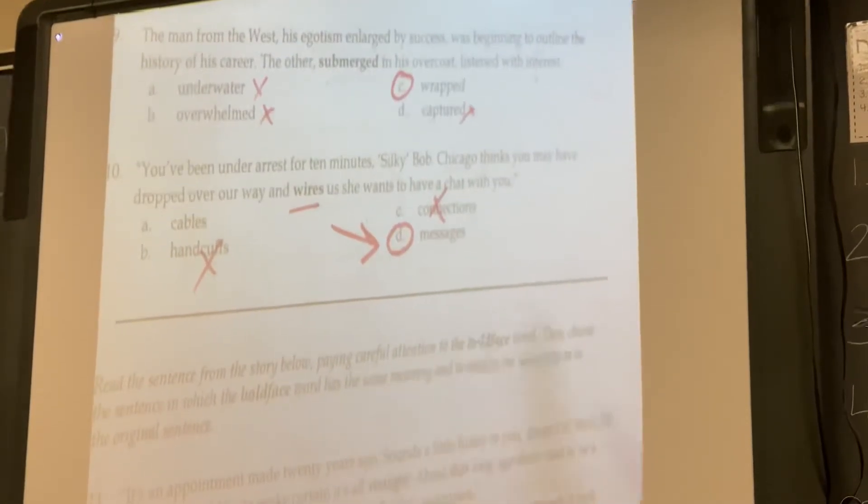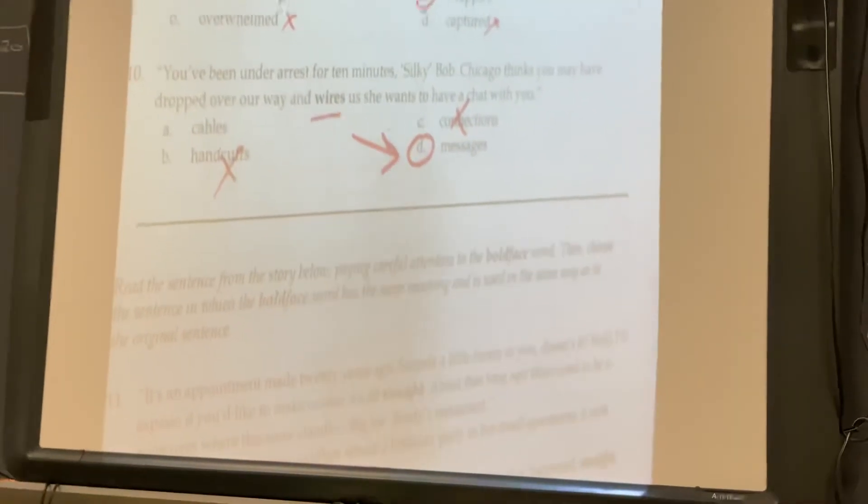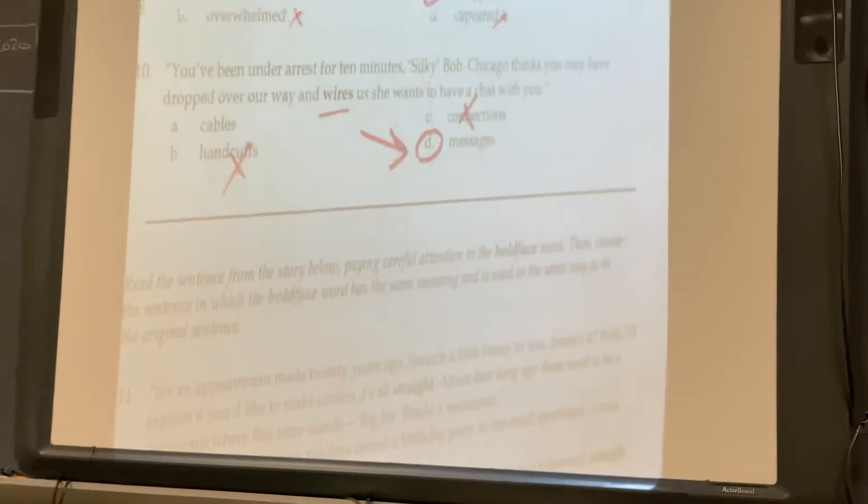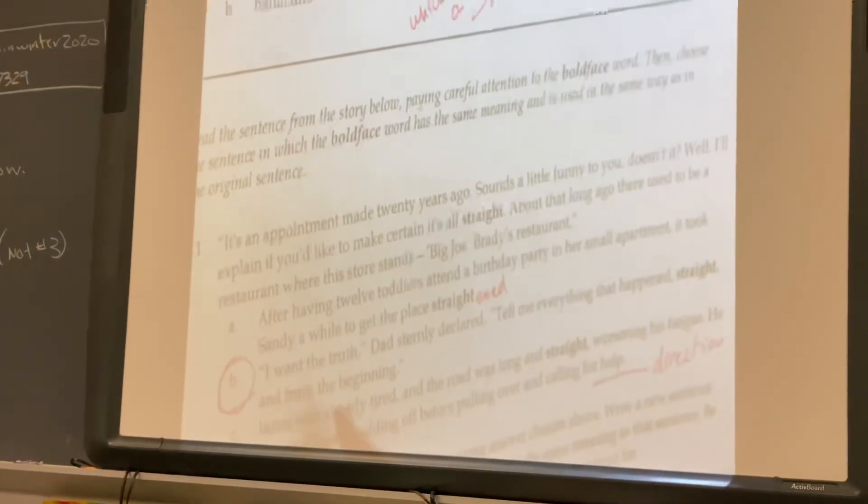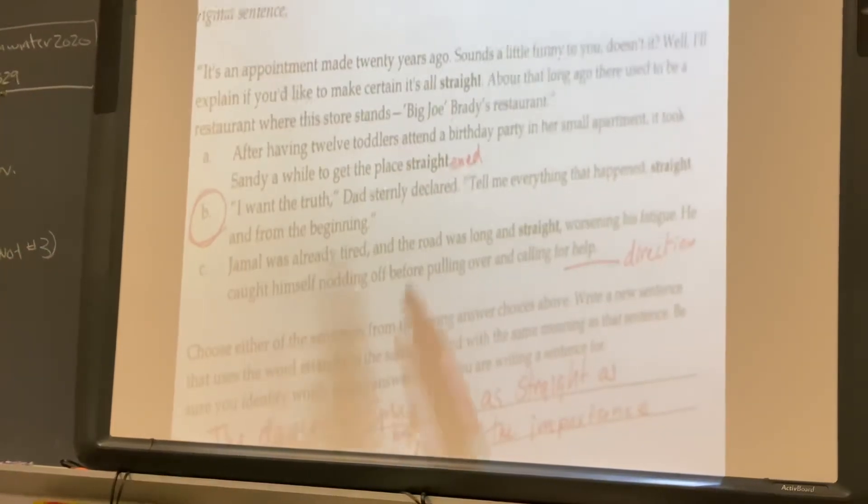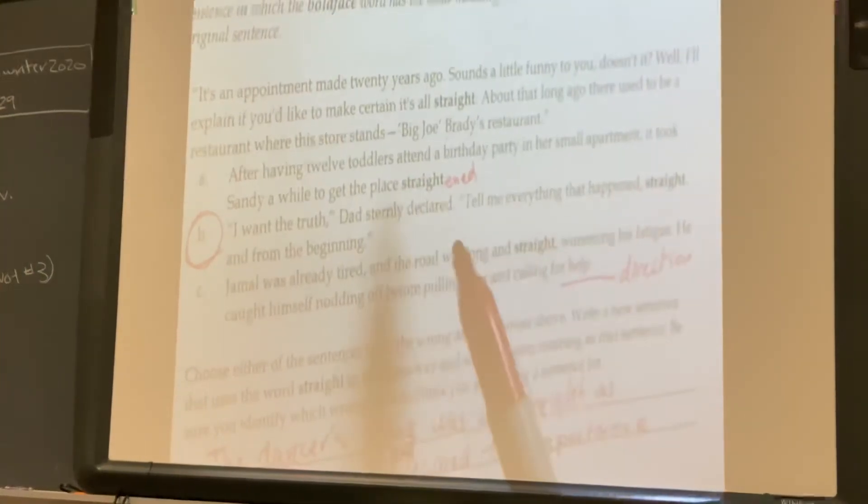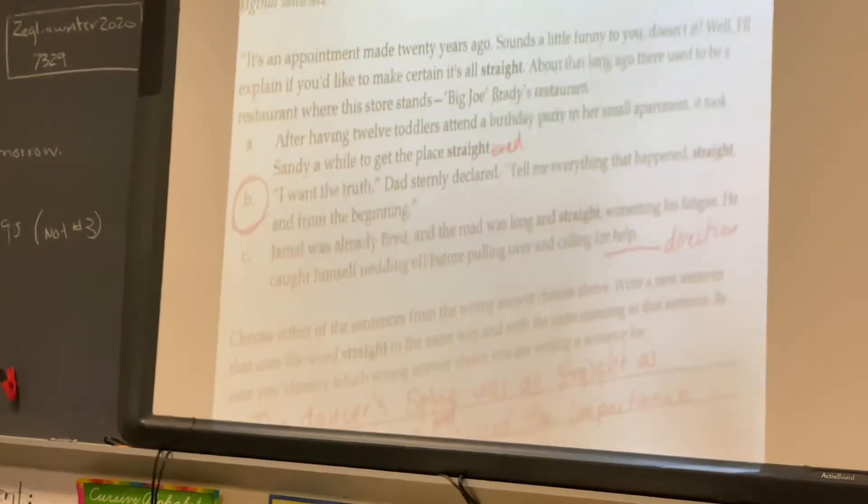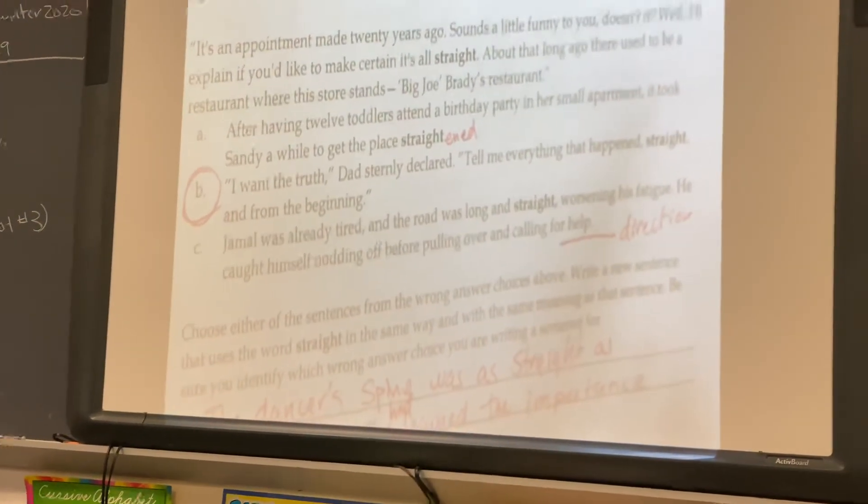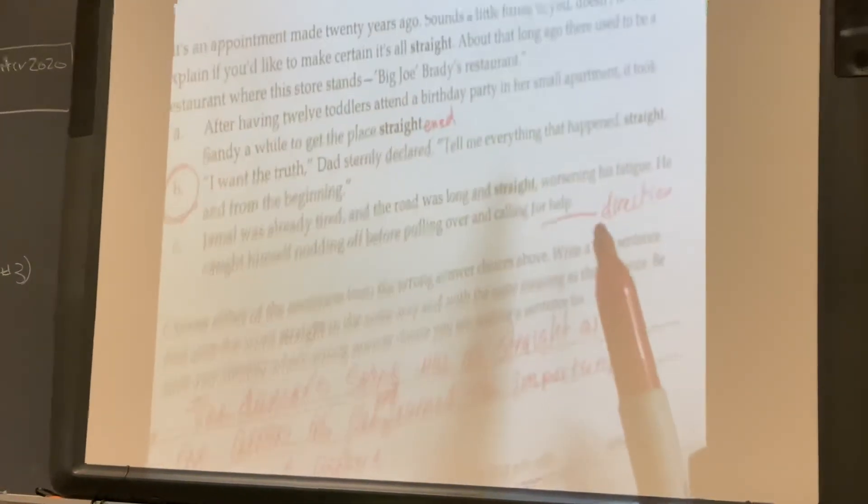In the last one, you're supposed to read the story, pay attention to the boldface word, then choose a sentence in which the boldface word has the same meaning as used the same way as the original sentence. So for this one, there's three meanings of the word straight. I had picked the middle one. I want the truth, that's sternly declared. Tell me everything that happened straight and from the beginning. To me, that was the same meaning. It doesn't mean length. It doesn't mean to clean. So I picked B for 11.